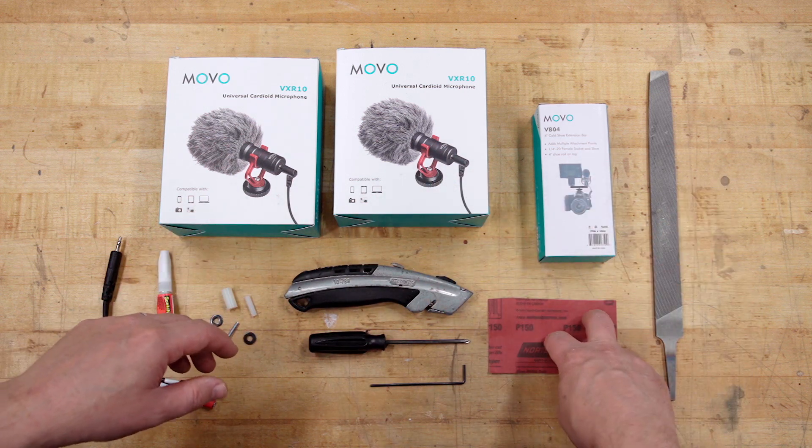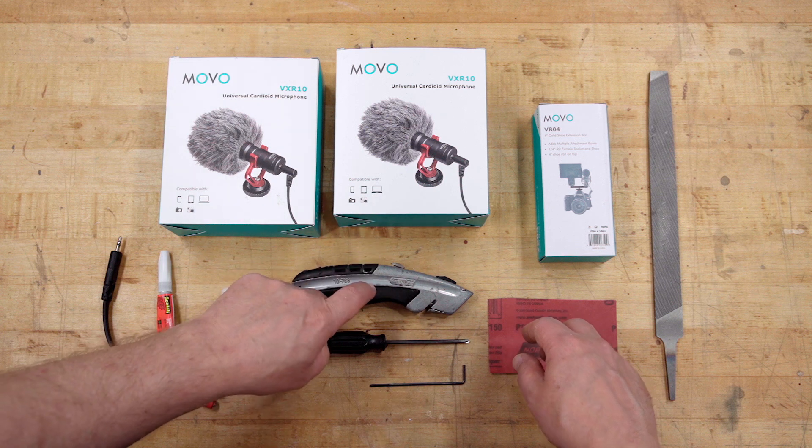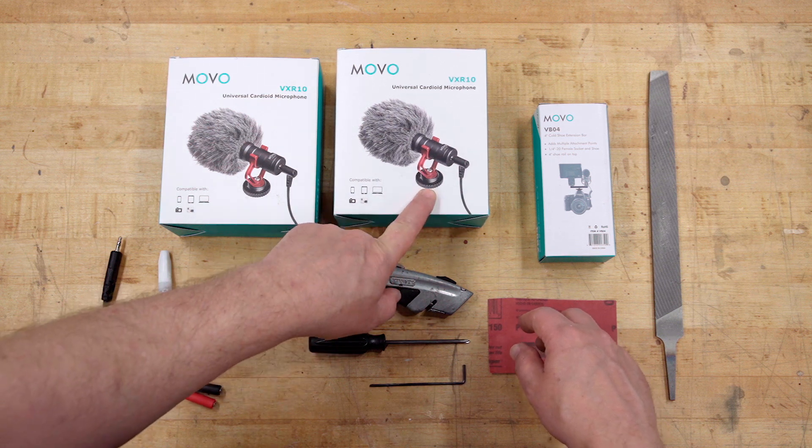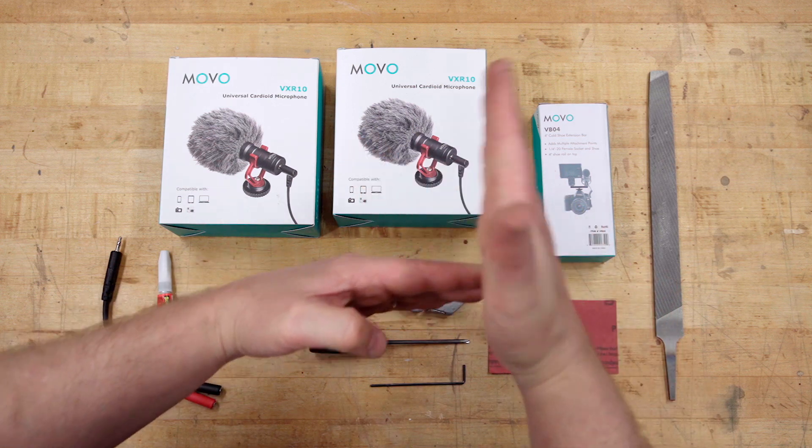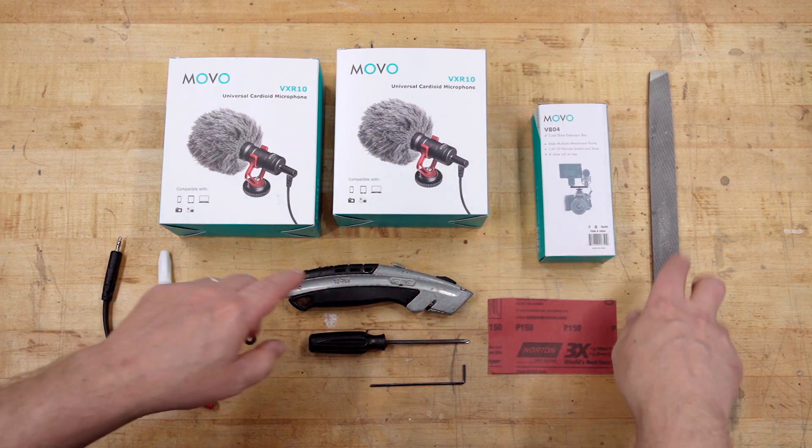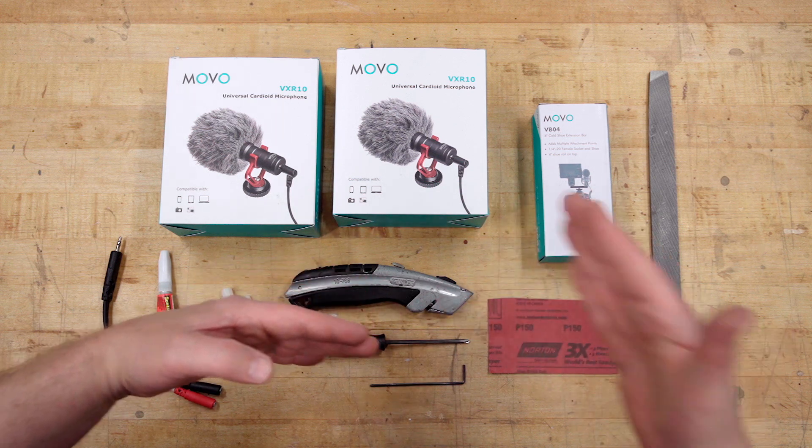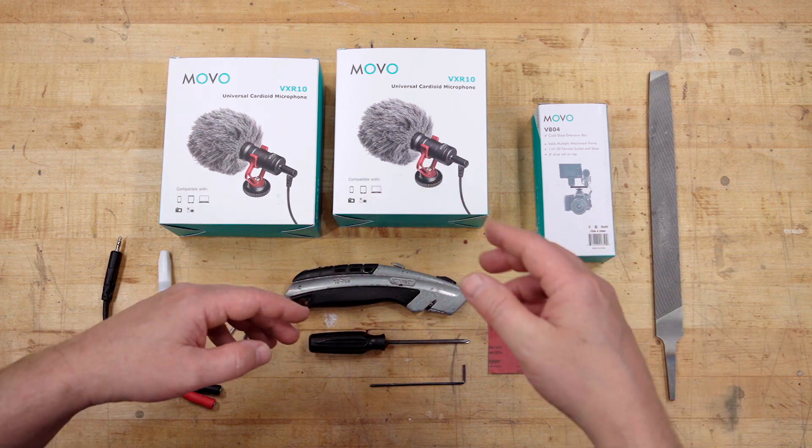Here I've assembled everything that we need for this build. We need a pair of VXR10 microphones. We need a cold shoe extension bar. This is the Movo VB04. It's a four inch long bar. It has a cold shoe mount on the bottom, and then the bar serves as a receiver for other cold shoe mount items. So we'll put both of these microphones onto this bar.